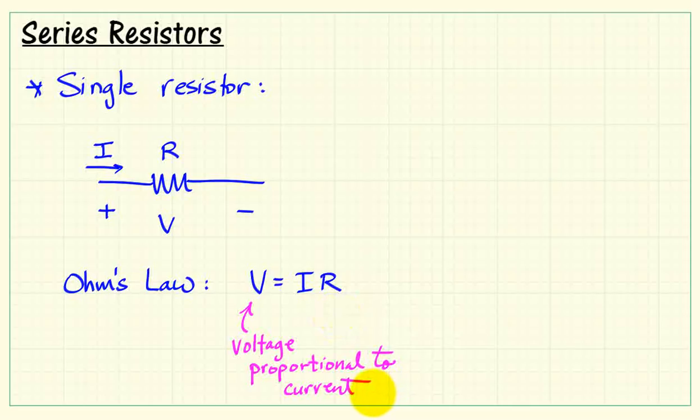From this, we see that the voltage is proportional to current, and R, or the resistance, serves as the proportionality constant.